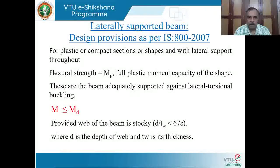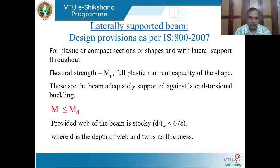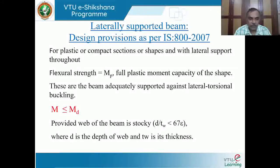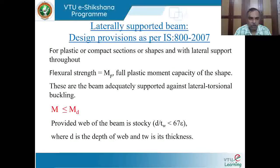For a plastic or compact cross section with lateral support throughout the beam length, the structural strength is MP — the full plastified moment capacity. The design capacity MD is directly proportional to MP and is obtained after applying the appropriate partial safety factor. The limit state equation is M ≤ MD, provided the web is stocky, meaning the depth-to-thickness ratio D/TW is less than 67ε.